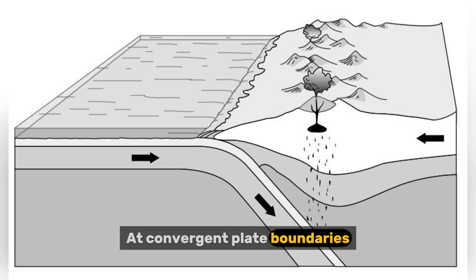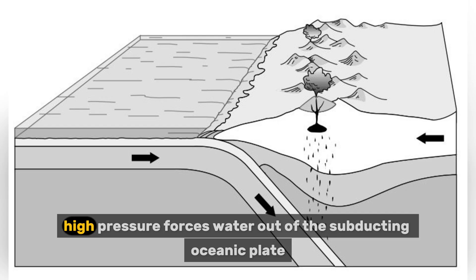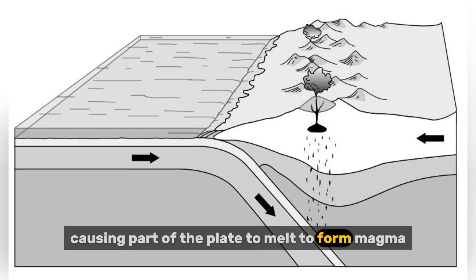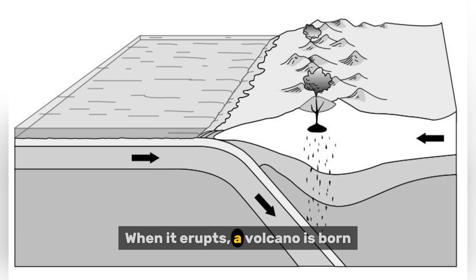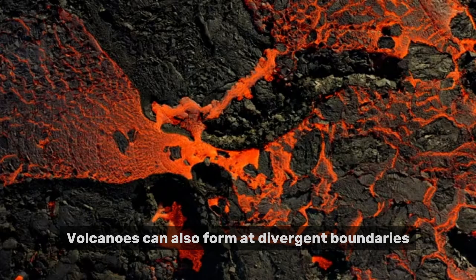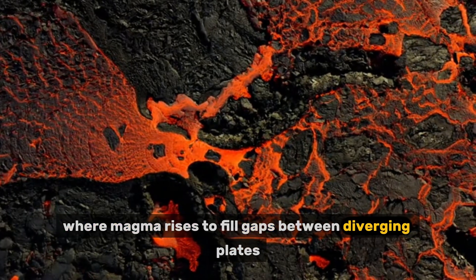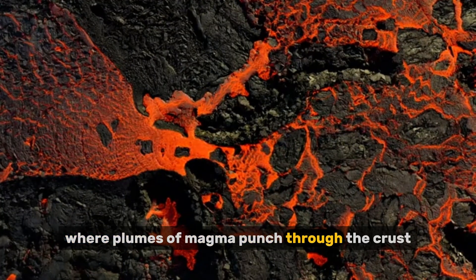At convergent plate boundaries, when an oceanic plate subducts beneath another tectonic plate, high pressure forces water out of the subducting oceanic plate. This water lowers the melting point of the overlying mantle, causing part of the plate to melt and form magma. This magma is less dense than the surrounding rock and rises through the crust to the surface — when it erupts, a volcano is born. Volcanoes can also form at divergent boundaries and at hotspots, where plumes of magma punch through the crust.